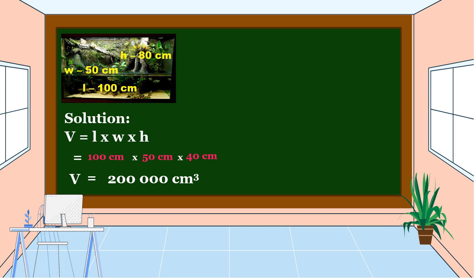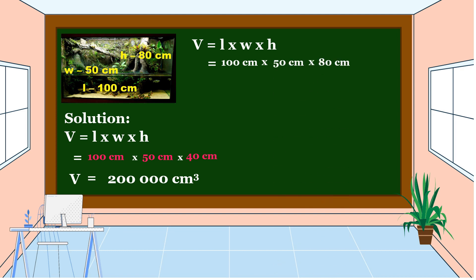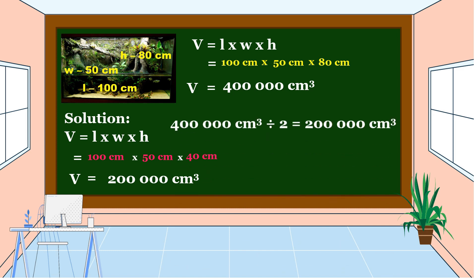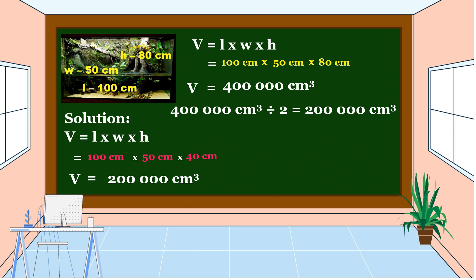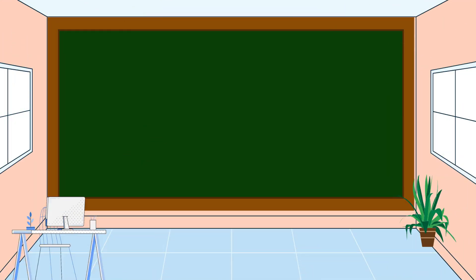We have another solution. Using the formula length times width times height: the length is 100 centimeters, the width is 50 centimeters, and the height is 80 centimeters. 100 centimeters times 50 centimeters is equal to 5,000 square centimeters. Times 80 centimeters, the volume is equal to 400,000 cubic centimeters. Then, we divide it by 2: 400,000 cubic centimeters divided by 2. The volume of the water is 200,000 cubic centimeters. I hope that you understand our lesson for today, and thank you for watching.